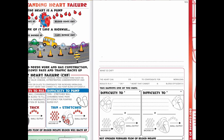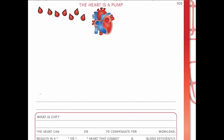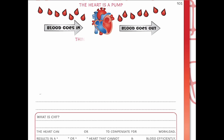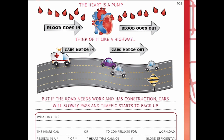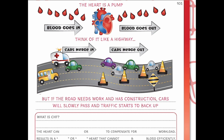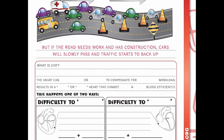So what exactly is it? Well, first we're going to go basic. The heart is a pump — our blood comes into our heart and our blood goes out of our heart. We're going to think of this much like a highway. If we have cars merging into the highway, they're also going to be merging out of the highway. But if there's any road work or construction going on, our cars are going to slowly pass and our traffic is going to start to back up. This is much like heart failure.